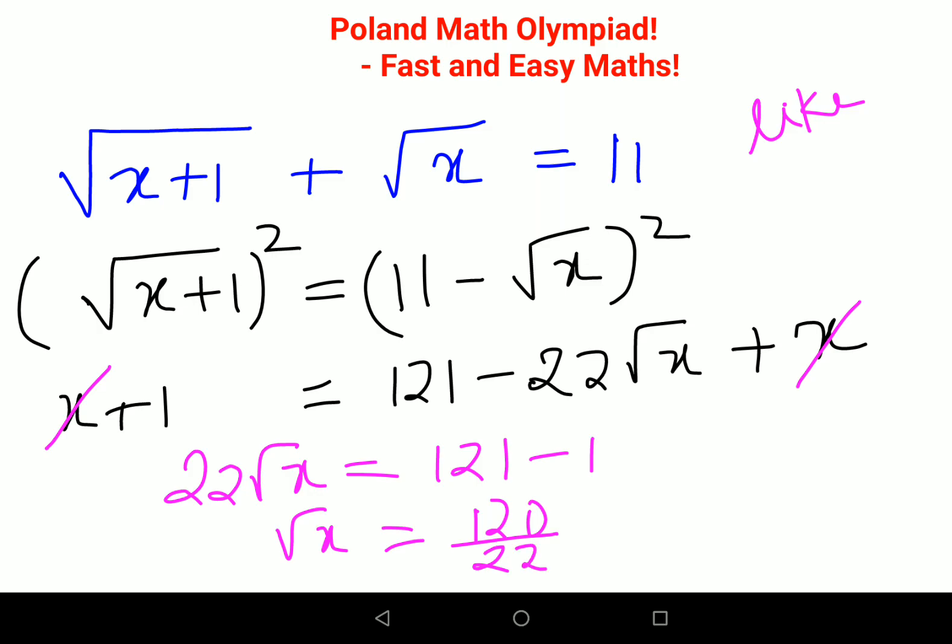Therefore, root x is 60 upon 11. So x will be, squaring on both sides, the final answer is 3600 upon 121.